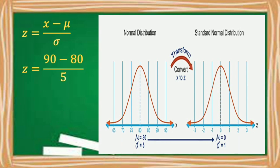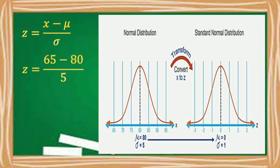If our normal variable x is 90, what would be its corresponding z-score? So 90 minus 80 divided by 5 is 2. If our x is 65, what would be its z-score? So 65 minus 80 divided by 5 is negative 3. Therefore, 65 in the normal distribution corresponds to a z-score of negative 3 in the standard normal distribution.